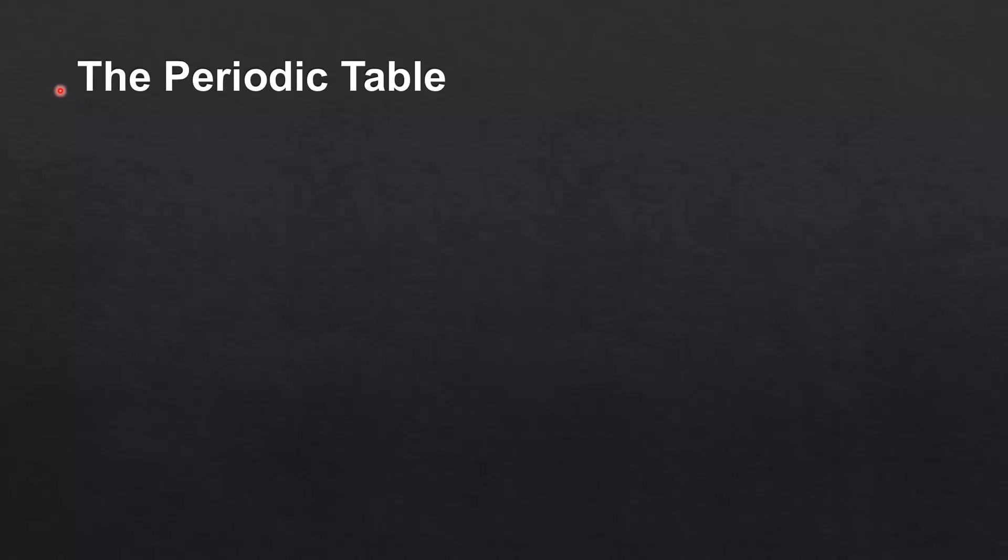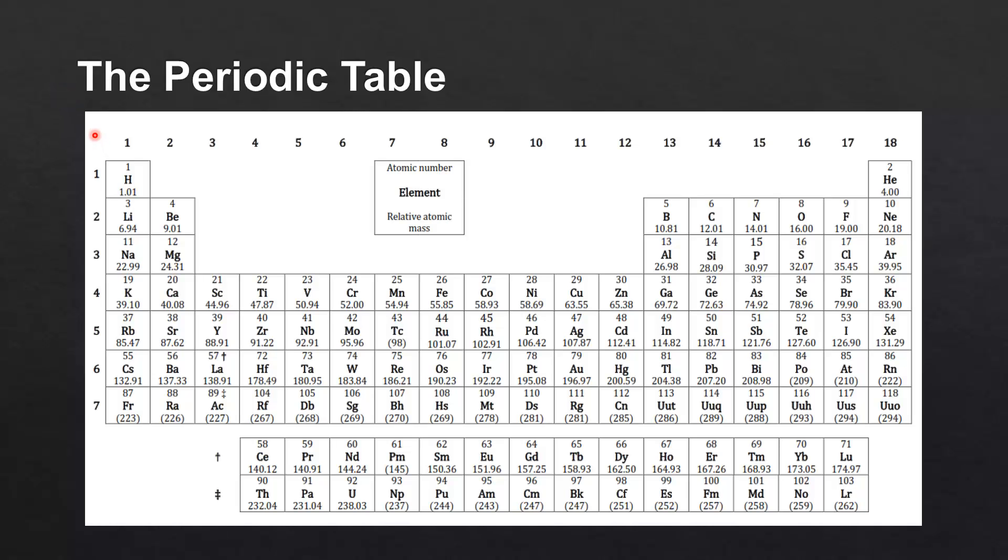In this video we'll have an introduction to the periodic table. So here we have the periodic table. The elements on the periodic table are arranged in order of increasing atomic number, which is the number of protons in the nucleus of an atom.